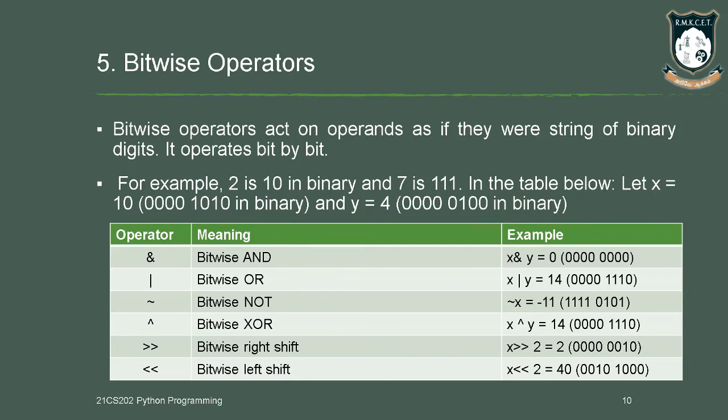The right shift and left shift operators shift the binary digits based upon the operation. Right shift means the digit will be shifted to the right side, and left shift means the digit will be shifted towards the left.